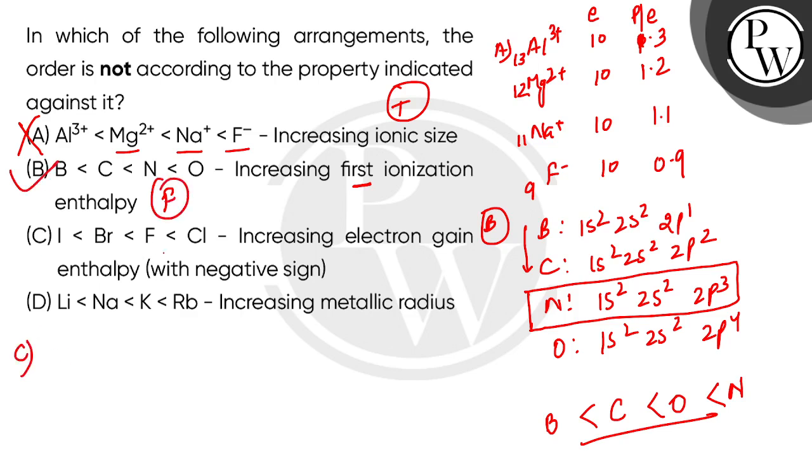If we look at C, here we talk about increasing electron gain enthalpy with negative signs, because electron gain enthalpy is energy generally released when you add an electron in an isolated neutral gaseous atom in the valence shell. Then forces of attraction are built up so negative sign comes. But in some cases it is also positive when you have to overcome inter-electronic repulsion. In halogens case, the order is chlorine, fluorine, bromine, and iodine.